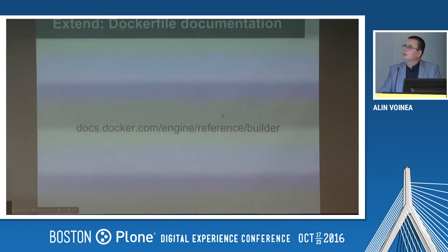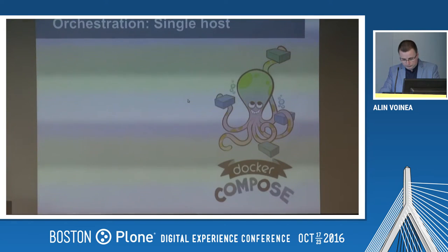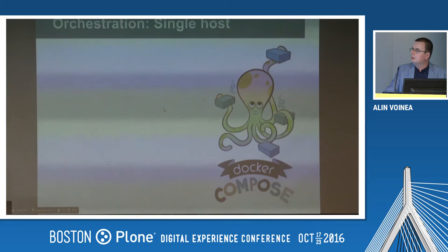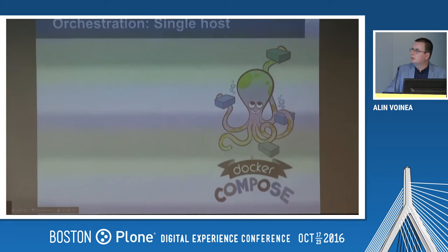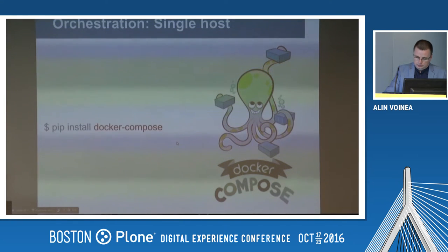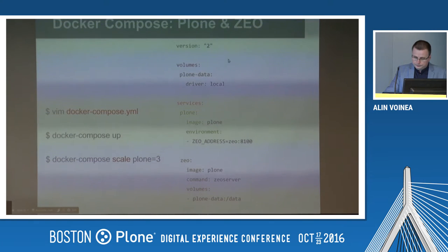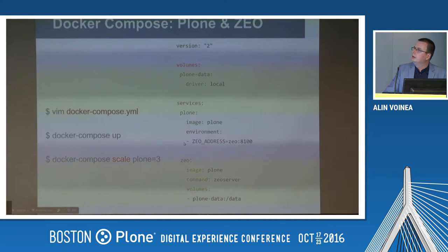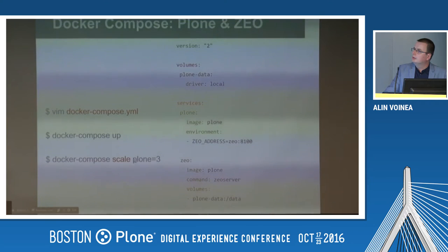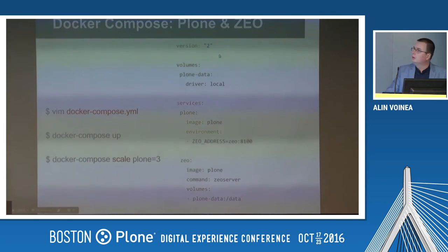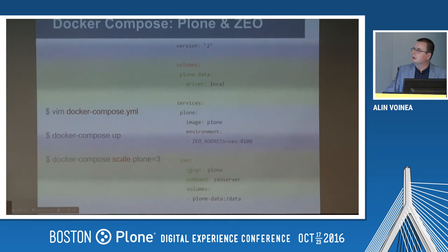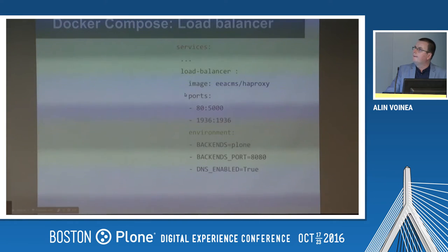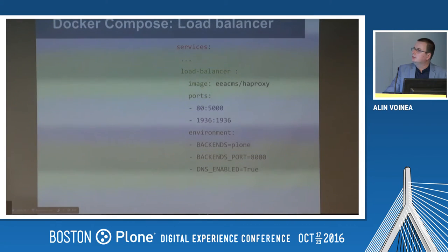More documentation is on Docker docs. Now, for orchestration on your machine or on a single host, you have the Docker Compose tool from Docker, which you install like `pip install docker-compose`. Then you write a YAML config. You don't have to define Zeo clients ten times — just use `docker-compose scale plone=3`. I also added a load balancer for this Plone setup.